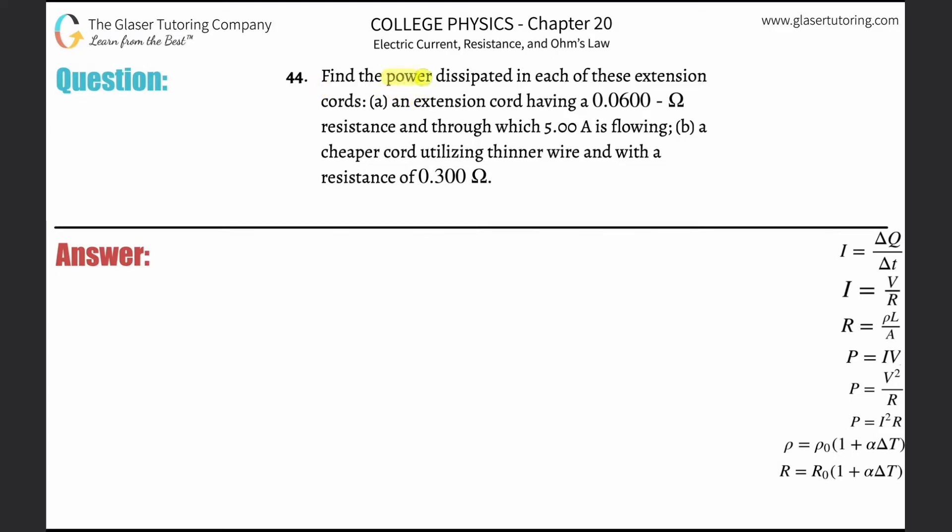Number 44: Find the power dissipated in each of these extension cords. Letter A: An extension cord having a 0.06 ohm resistance through which 5 amps is flowing. So they're asking us to find the power.